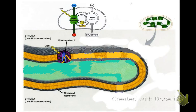Let's look at non-cyclic electron transport, or the light-dependent reactions — a specific type of the light-dependent reactions — in more detail. You're looking at the thylakoid membrane; you can see the stroma on either side of the membrane. So we're looking at one little isolated thylakoid.